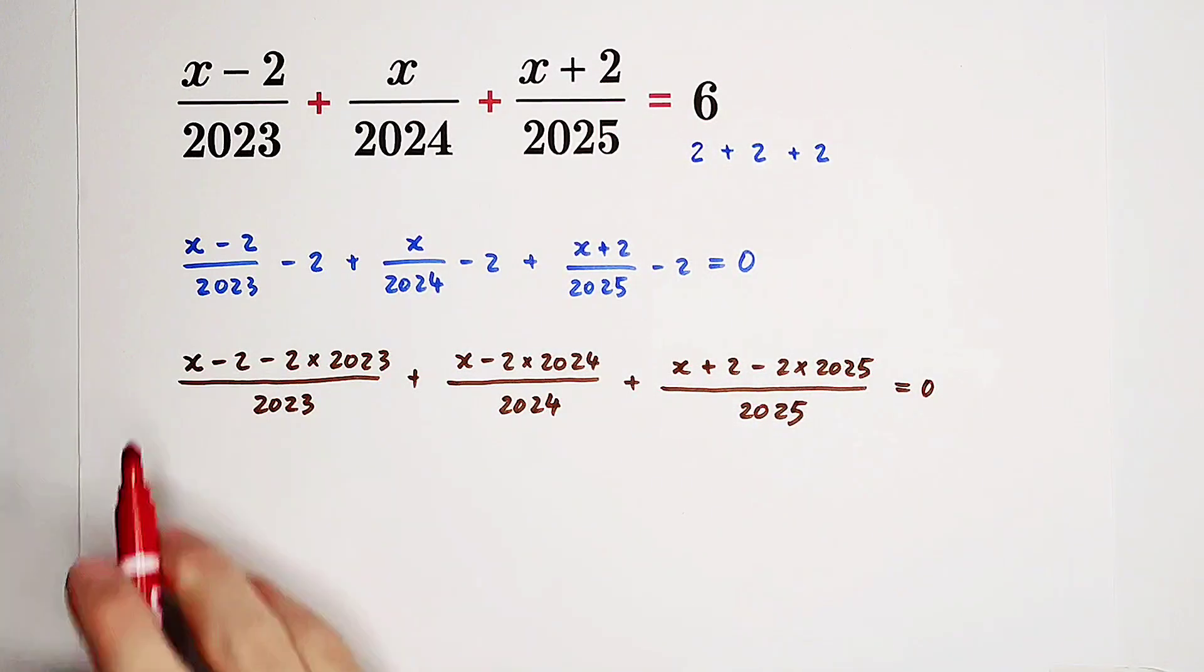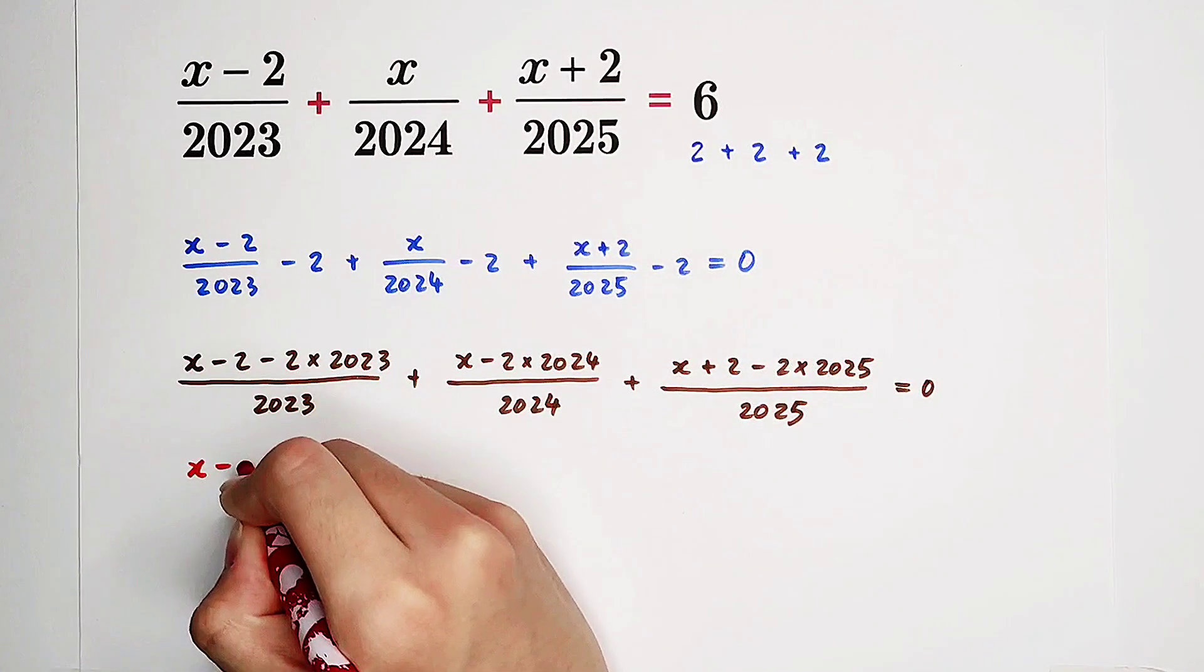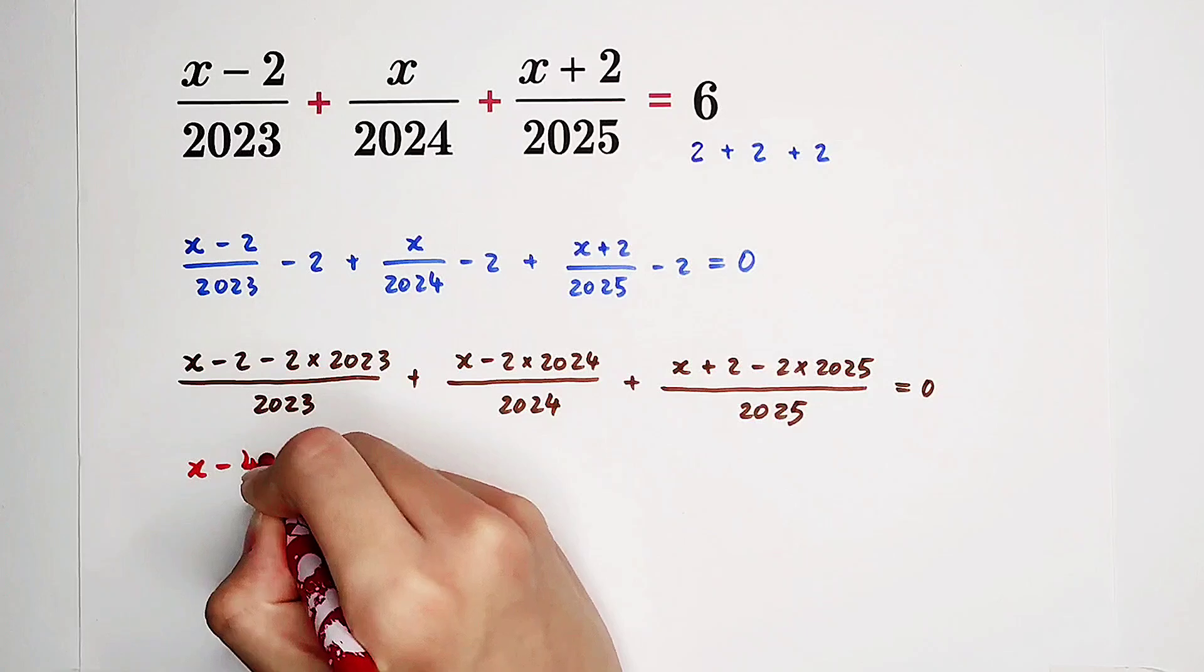Now, if you have a look at the numerators, you will find out that they are all equal to X minus 4048.